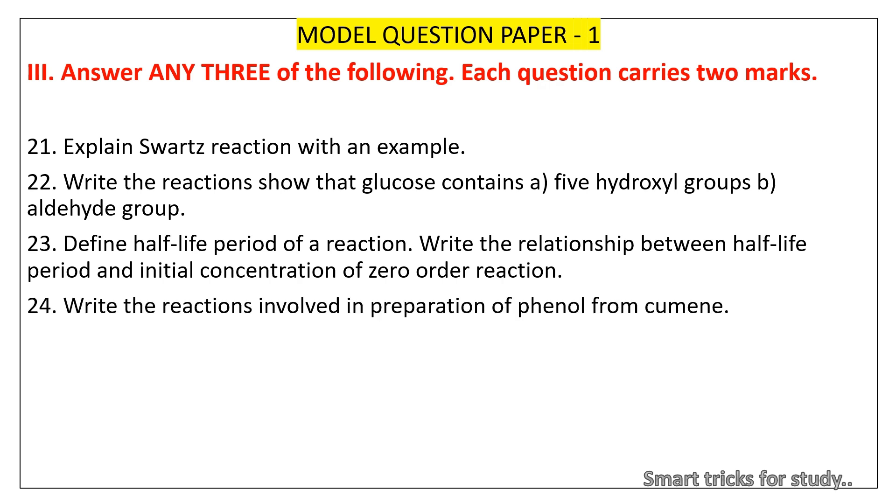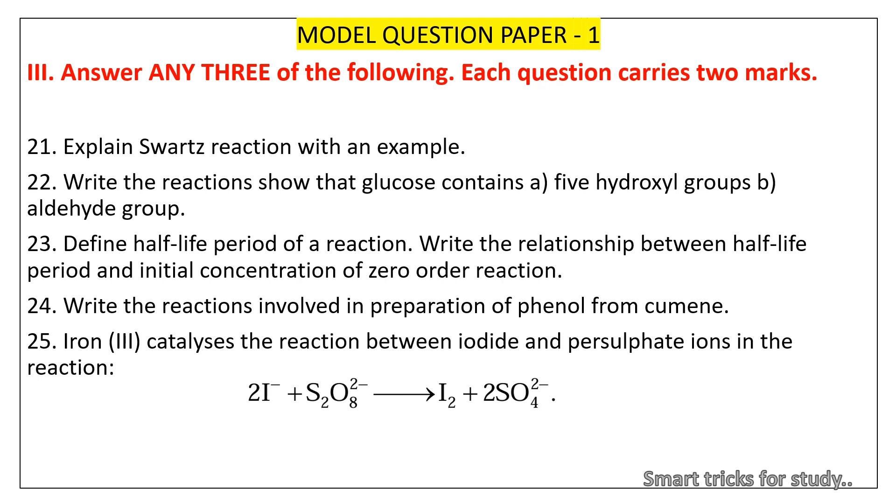Question 24: Write the reactions involved in preparation of phenol from cumene. Question 25: Iron(III) catalyzes the reaction between iodide and persulphate ions in the reaction. Explain the catalytic action of catalyst iron(III) by using chemical reactions.